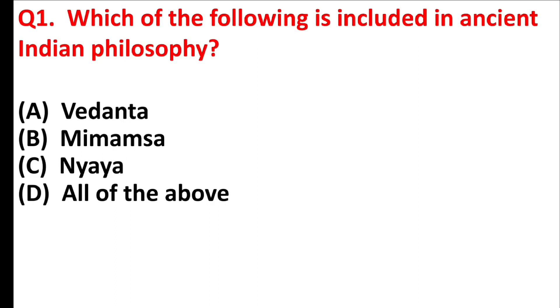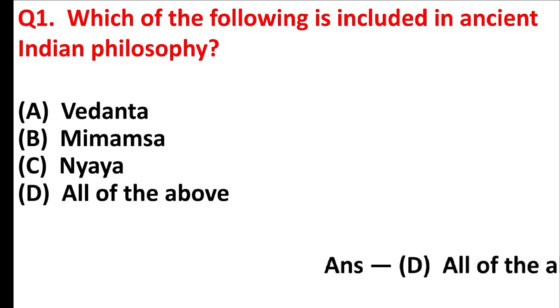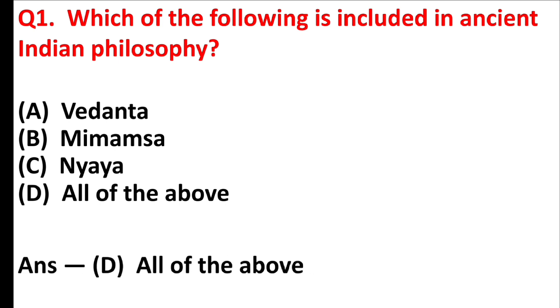Your first question is: which of the following is included in ancient Indian philosophy? Answer is option D, all of the above — means Vedanta, Mimansa, Nyaya.